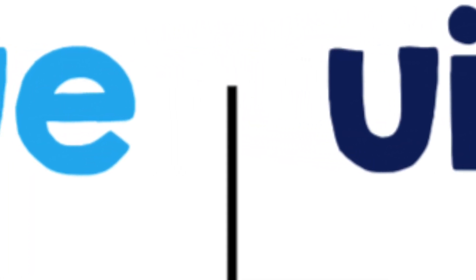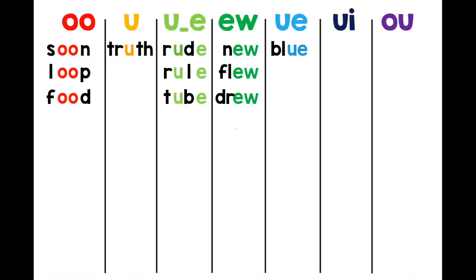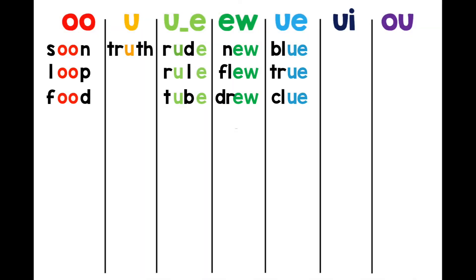Let's move on to OO spelled U-E. Blue: B-L-U-E. True: T-R-U-E. And clue: C-L-U-E.